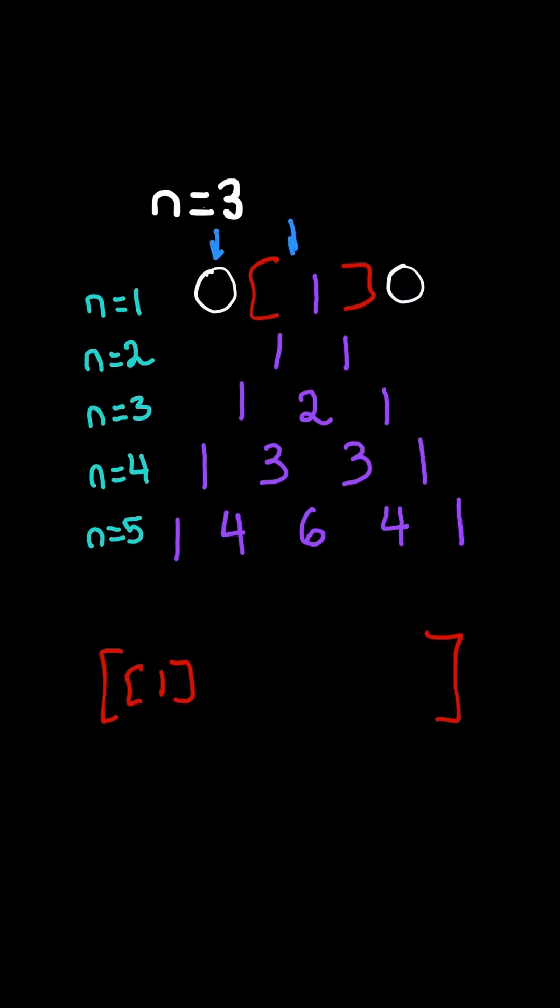We will have two pointers at the first and second element of the previous row. We sum the values of our pointers to produce the new element, and then we advance both pointers.